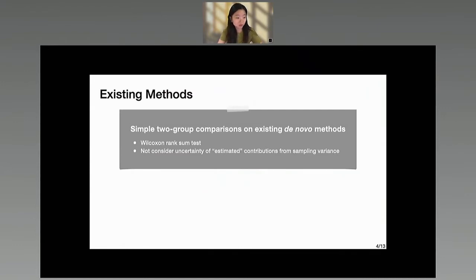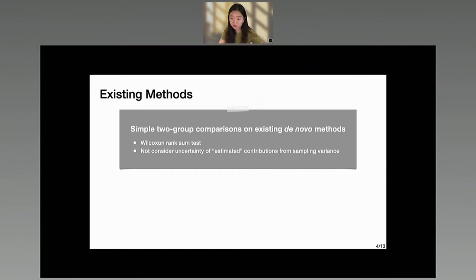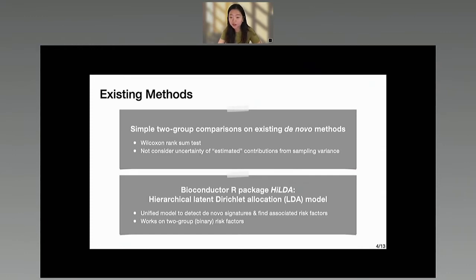Some methods have been trying to tackle this problem by associating risk factors that may help find etiologies. Initially, some de novo methods used their estimated contributions to do a simple two-group comparison with Wilcoxon rank-sum tests on a binary risk factor — for example, non-smoking versus smoking groups. This is intuitive and can be added to existing methods, but authors of a more recent method named HILDA pointed out that these methods may lack power. Depending on the samples used to estimate contributions, the contributions may vary highly, and taking results without considering uncertainty may lead to loss of test power. To overcome this, HILDA used a unified hierarchical Bayesian LDA model to detect de novo signatures and test for differences between binary groups while accounting for uncertainty.